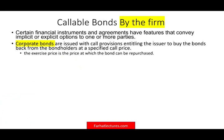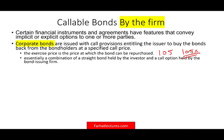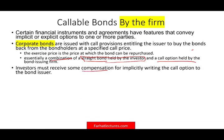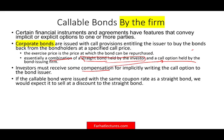Essentially, this type of bond is a combination of a straight bond held by the investor and a call option held by the bond-issuing firm. The investor must receive compensation for granting that option — if you are selling someone an option, you want to be compensated. If the callable bond were issued with the same coupon rate as the straight bond, we would expect it to sell at a discount to the straight bond.